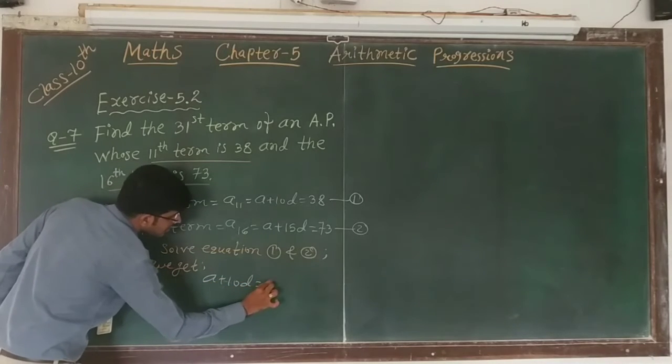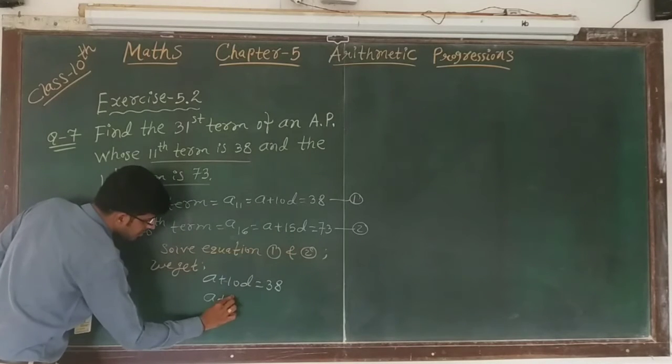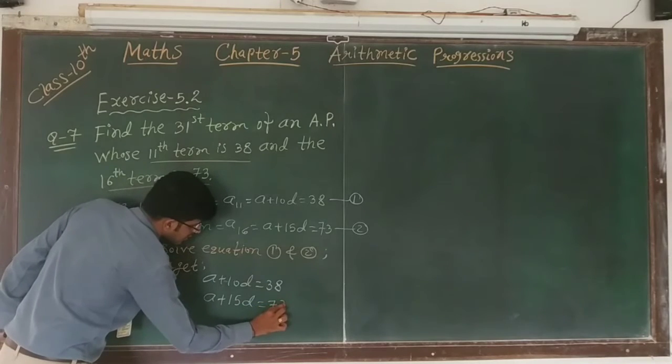And a plus 15d is equals to 73. Now we will check the sign, here around minus minus.